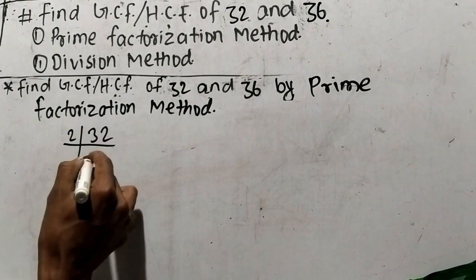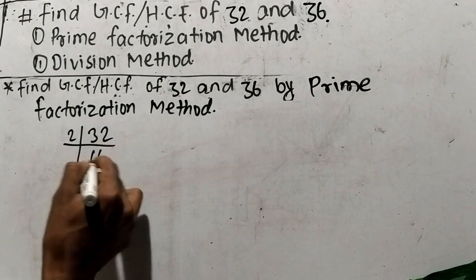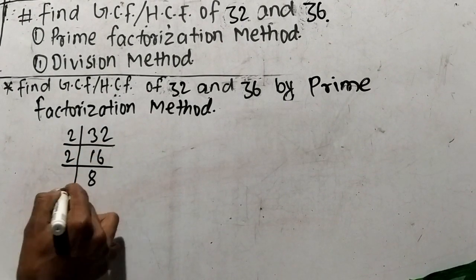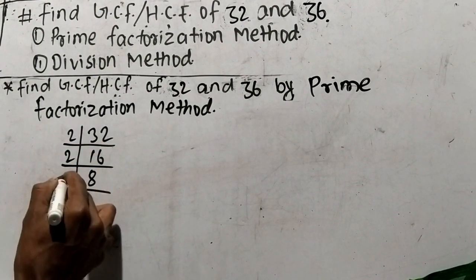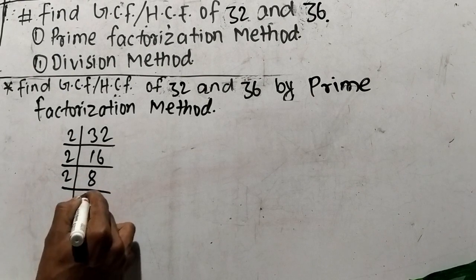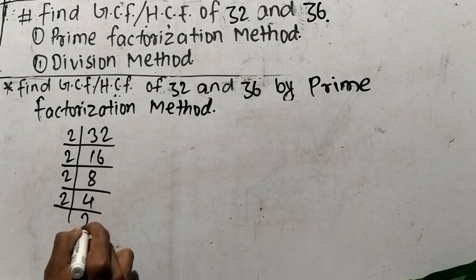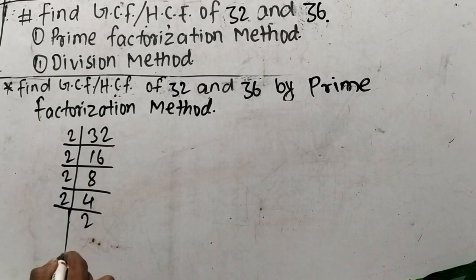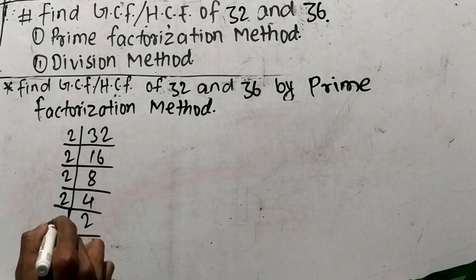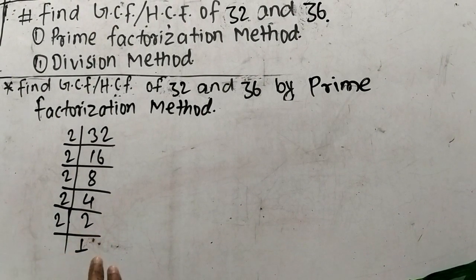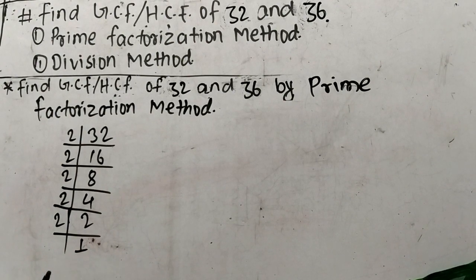So let's find out the prime factors of 32. It is 2 times 16 means 32, like as 2 times 8 means 16, like as 2 times 4 means 8, and 2 times 2 means 4, and at last it is 2 times 1 means 2. So we have taken out the prime factors of 32.